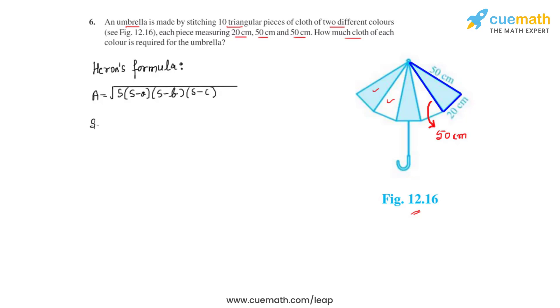In order to find the area, we first need to find the semi-perimeter, which can be found by adding up the three side lengths and dividing it by two. So we add 50 plus 50 plus 20 and divide that by two. On further calculation, we get the semi-perimeter S to be equal to 60 centimeters.